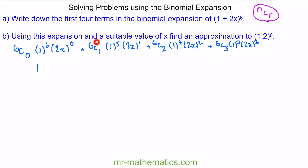We also know that 6C1 gives us 6 on our calculator, and then we have 1 power of 2x, so the second term becomes 6 lots of 2x. For our next term, 6C2 is 15. We know 1 to the 4 is 1, and then 2x all squared becomes 4x squared. So we have 15 lots of 4x squared.